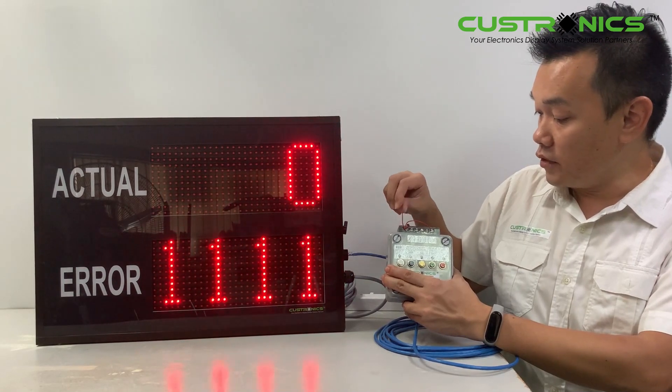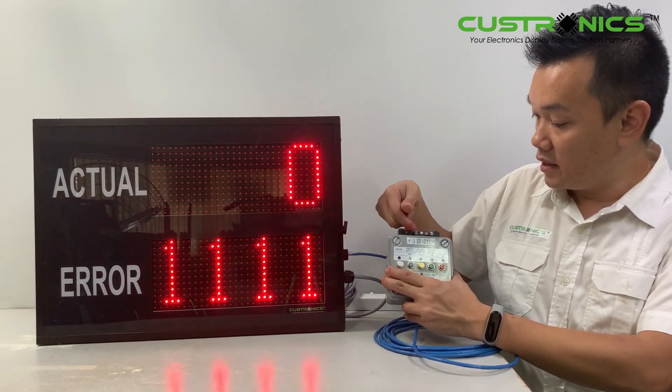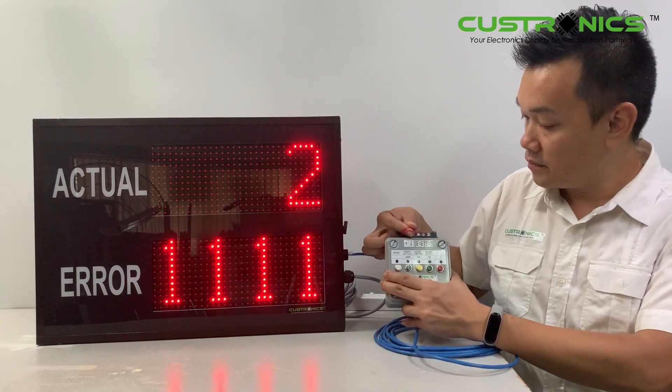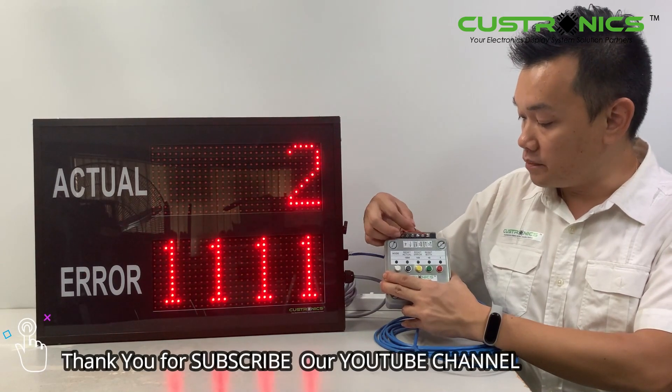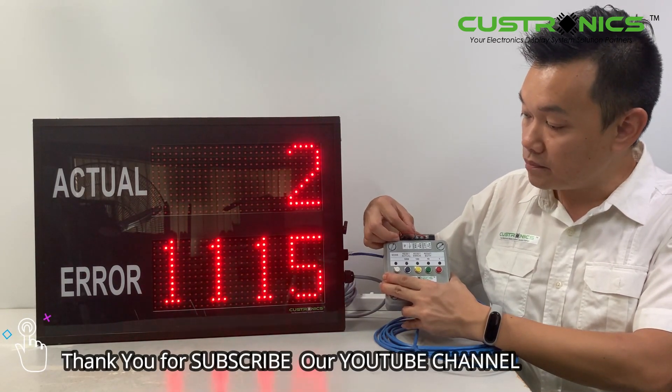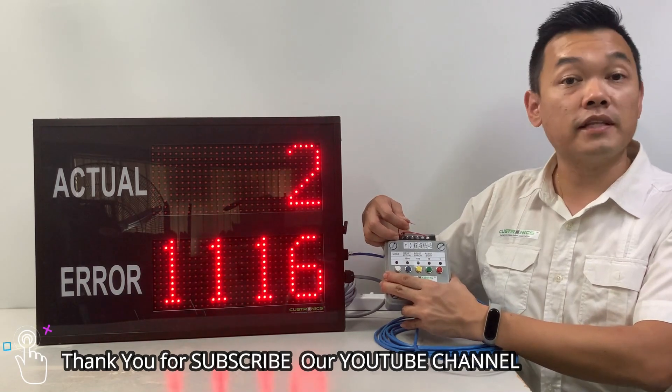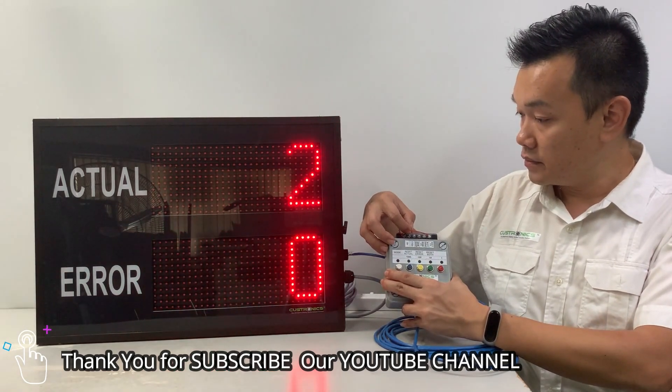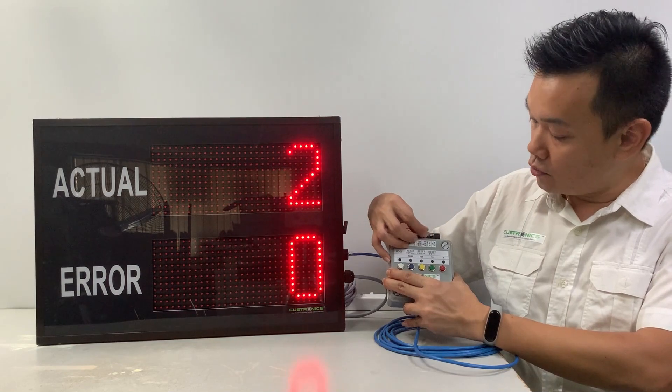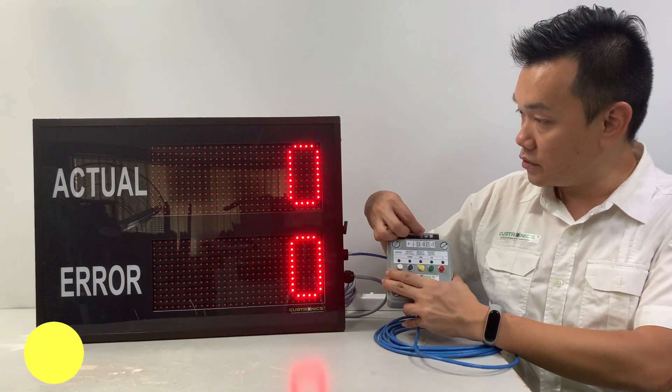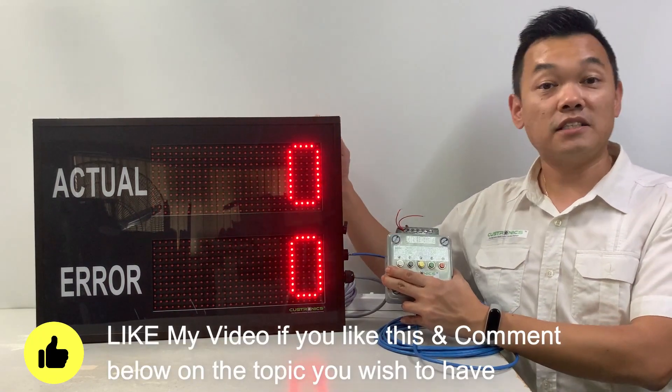For the error counter, let's say error plus one. By the end of the day, I want to reset. Reset. If you're going to show it, reset again. This is how it looks.